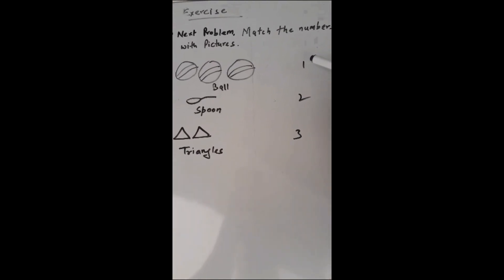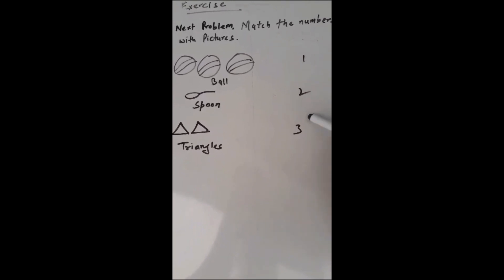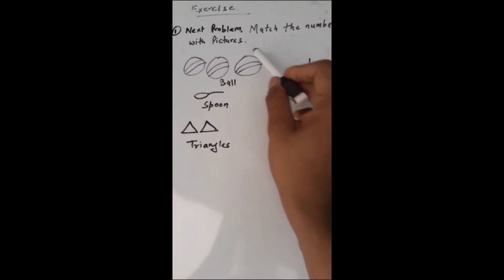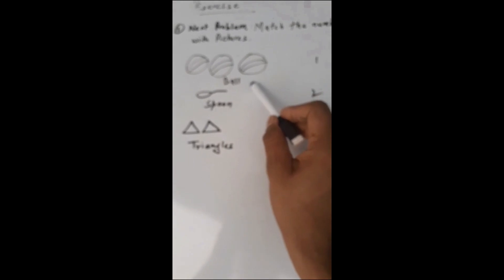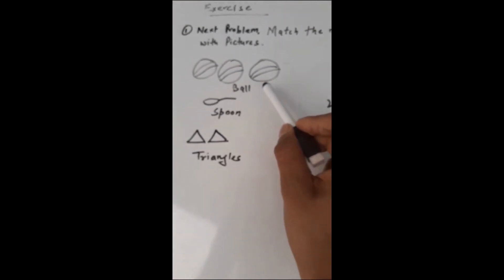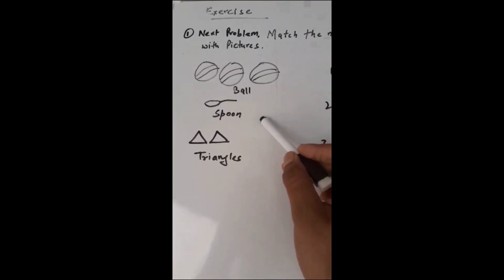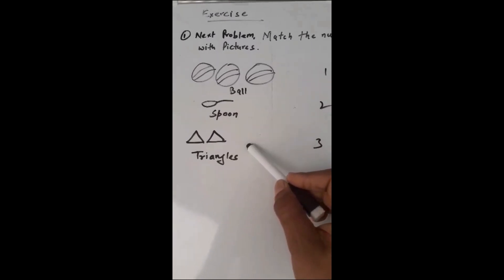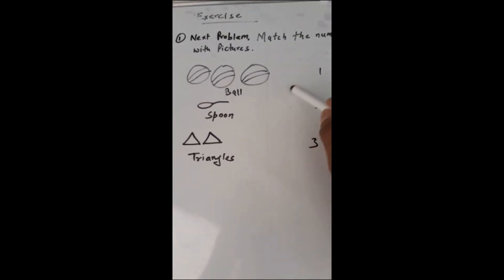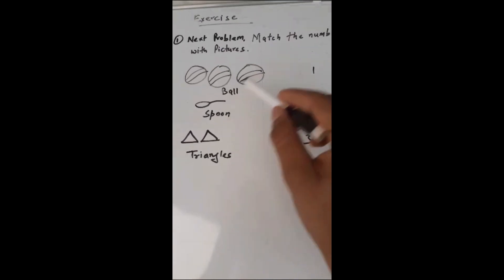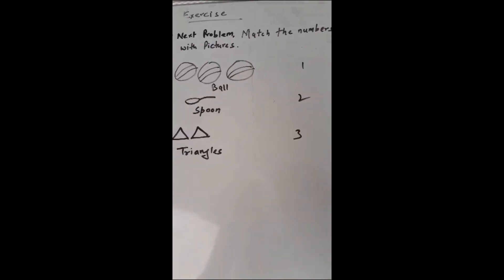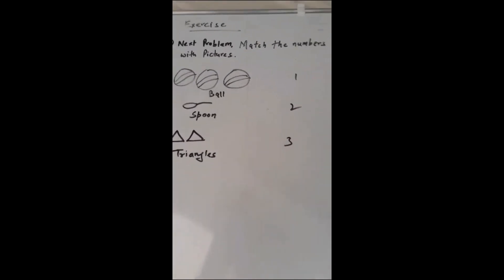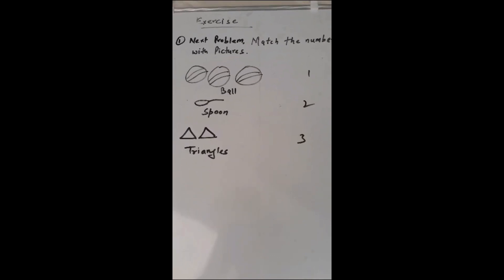So you have to count the objects. For example, here are balls. How many balls are there? Or how many spoons are there? Or how many triangles are there? So you have to match with the correct number. Kindly let me know the answers in the comment section.